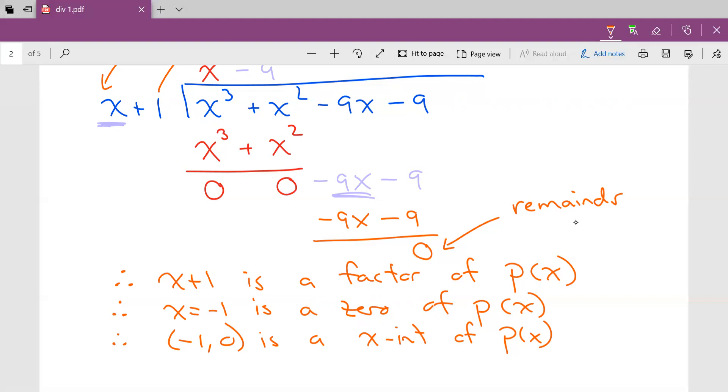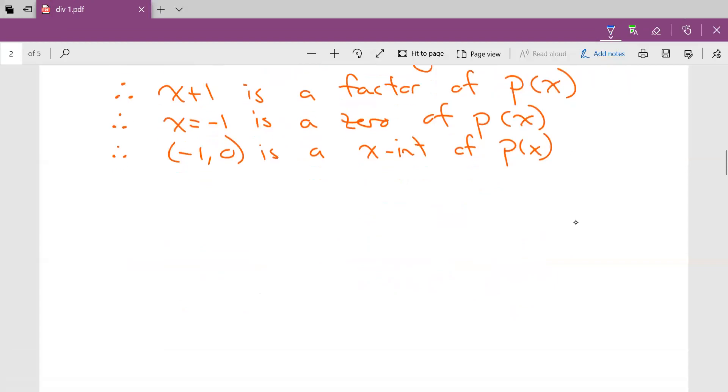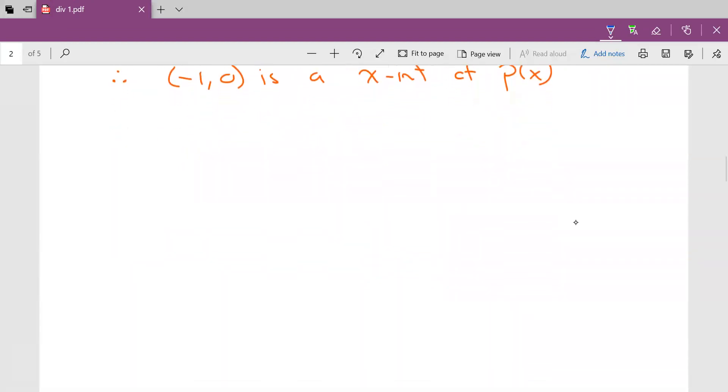What would happen if we divided and we didn't end up with a remainder of 0? I'll show you. So let's do this one more time. Same polynomial, but this time I'm going to divide by, I don't know, let's just say x + 2.